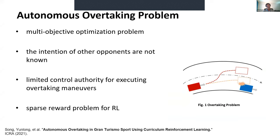The next project is about overtaking, which is a more difficult problem because it can be considered a multi-objective optimization problem: there is a trade-off between maximizing speed, avoiding obstacles, and overtaking opponents. The intentions of other opponents are generally unknown, and the vehicle is already driving at high speed with limited control authority for executing aggressive overtaking maneuvers. For reinforcement learning specifically, this is a sparse reward problem because overtaking doesn't happen often, meaning you don't have enough data to solve it directly using model-free reinforcement learning.